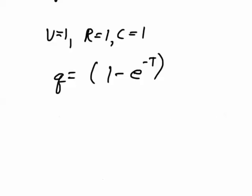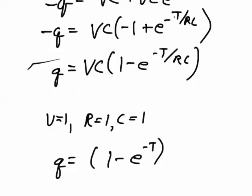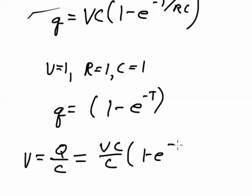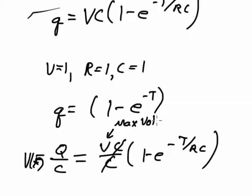Now, one other detail. The voltage on the capacitor is going to be voltage equals the charge divided by the capacitance, which is going to be VC over C times one minus e to the negative t over RC. So the voltage at a given time t is going to be the maximum voltage. This is the max voltage across, because after a long period of time, the entire voltage goes across the capacitor, and no voltage is across the resistor, because there's no current going through the resistor.